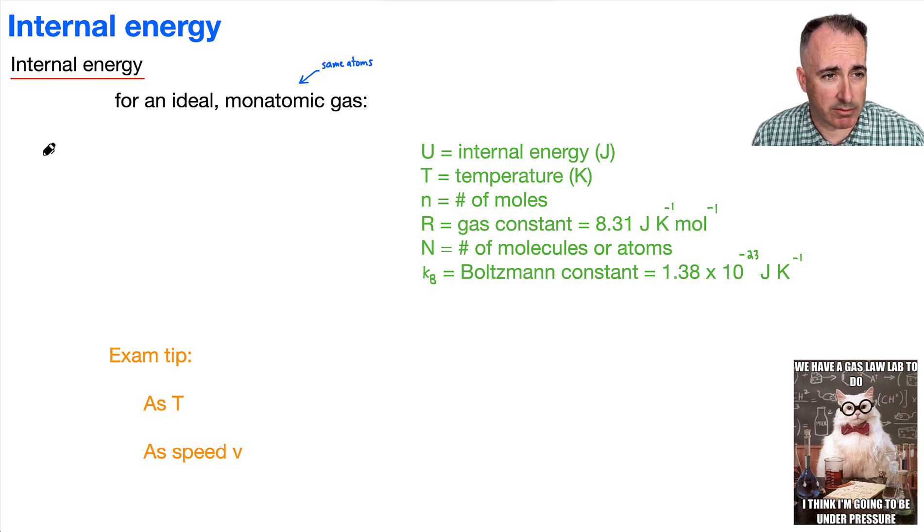There's actually two of them. So we've got U equals, this is the internal energy. It's going to be equal to 3 halves times nRT. But we've also got this version here. It goes U equals 3 halves. This time is capital N times KB times T.